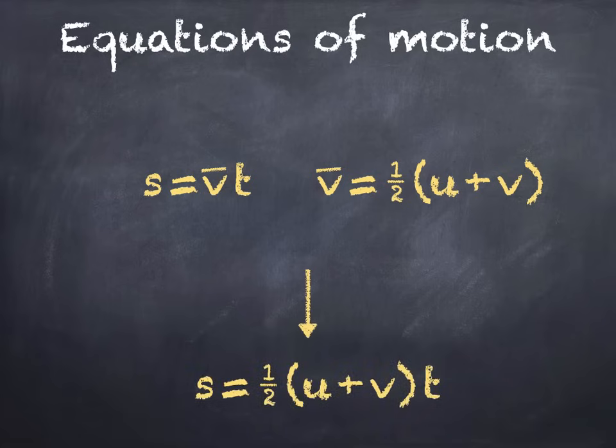s is equal to half u plus v times t. All we have to do is substitute the second equation into this position in the first, like so.